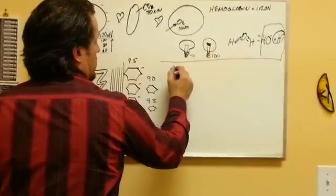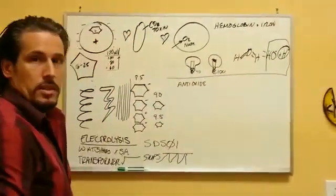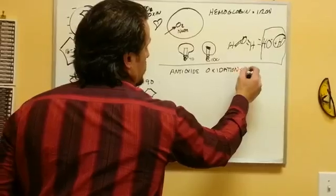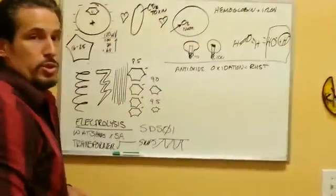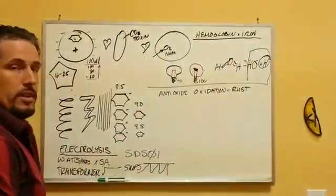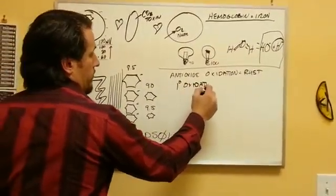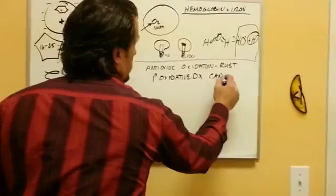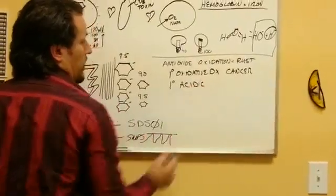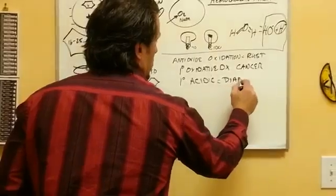In the human body, oxidation basically is corrosion or rust, and it will have a drastic effect especially on our hemoglobin. The number one oxidative disease that we have right now is cancer. The number one acidic disease we have is hyperketoacidosis, also commonly known as diabetes.